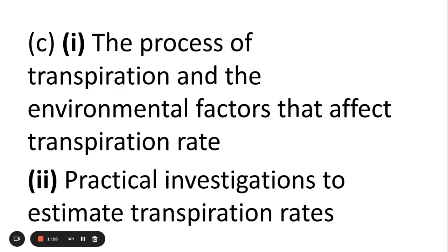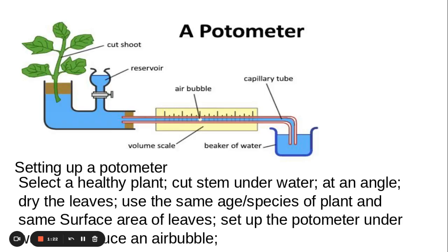Let's look at some practicals. You need to know about the potometer and this is what one looks like. You also need to know how to set this up. When I'm setting up a potometer, I need to select a healthy plant that I'm using. I need to make sure that I cut the stem underwater to avoid any air bubbles getting into my xylem. I need to cut the stem at an angle to increase the surface area for the xylem to take up the water.